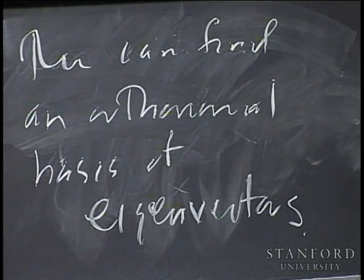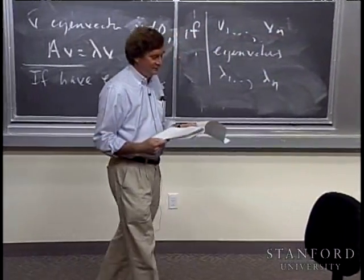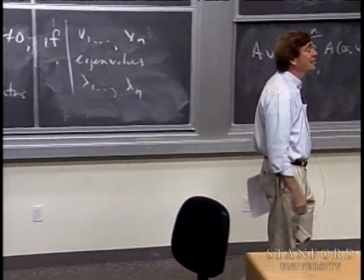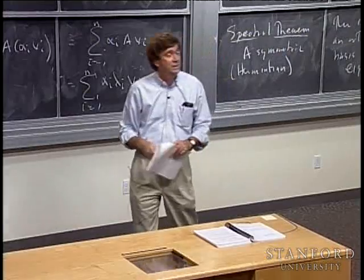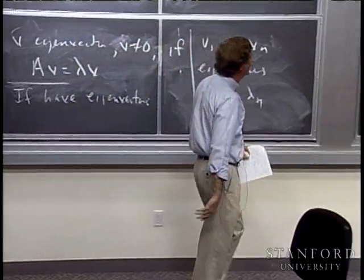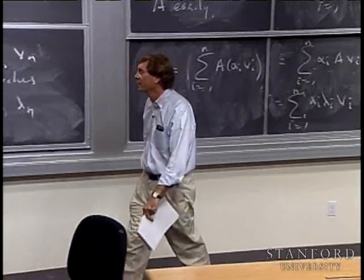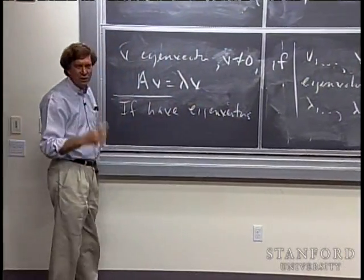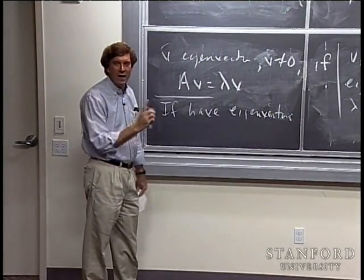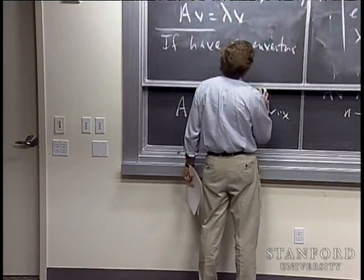We started with this simple idea of superposition — the sum of inputs goes to sum of outputs, a scaled input goes to a scaled output — and the structure that entails is really quite breathtaking. There's one other important fact: it's not just that matrix multiplication is a good example of finite-dimensional linear systems. In the finite-dimensional case, matrix multiplication is the only example.